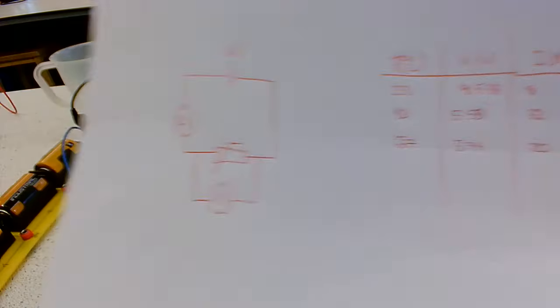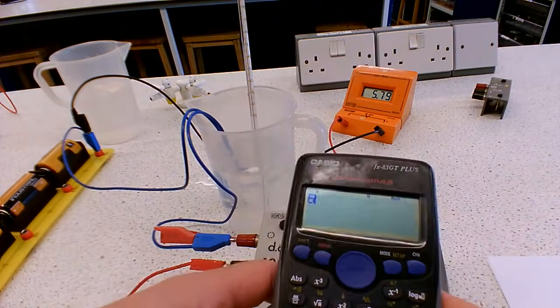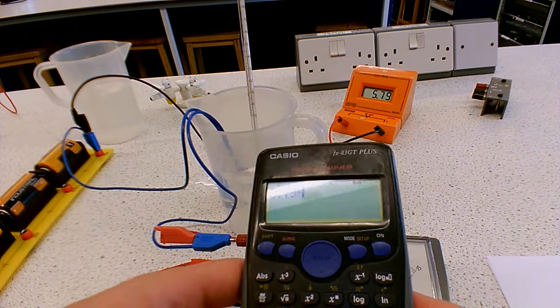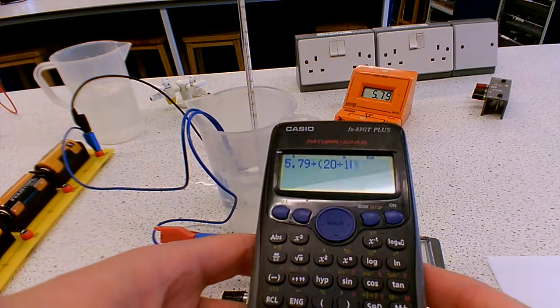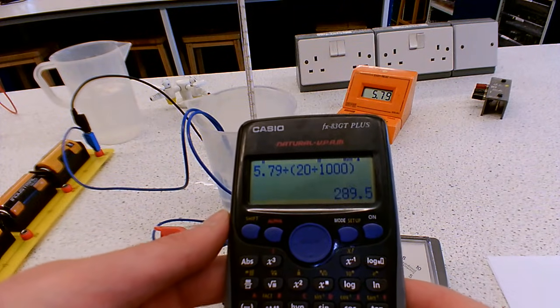Let's do that calculation. So we're going to do 5.79 divided by 20 divided by 1000. That's all in brackets, so we get it done in the right order.